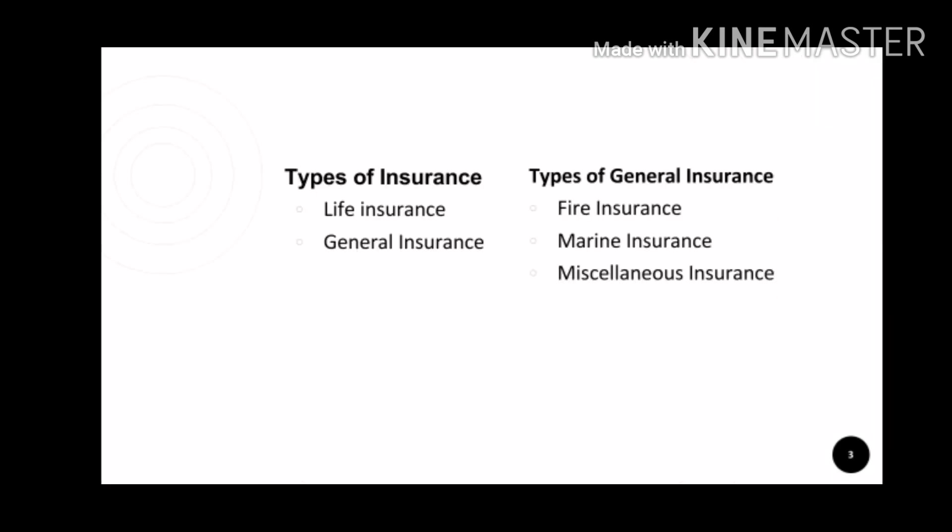Insurance is a contract of indemnity between the insurer and the insured. Insurance can be broadly divided into two: life insurance and general insurance. Life insurance covers the risk of human life, and all insurances other than life insurance are called general insurance. General insurance can again be divided into three: fire insurance, marine insurance, and miscellaneous insurance.